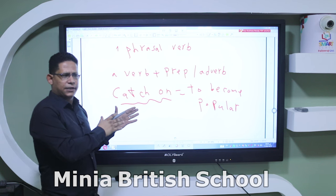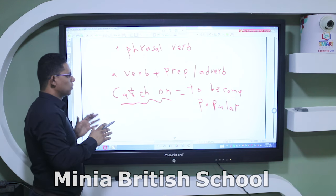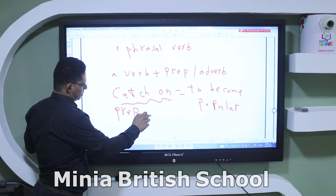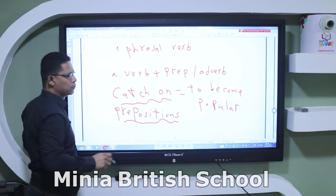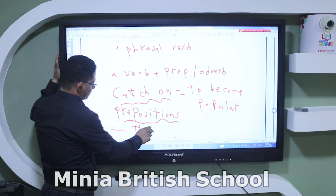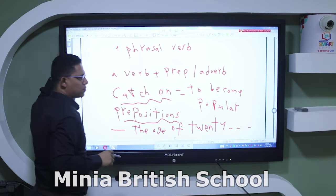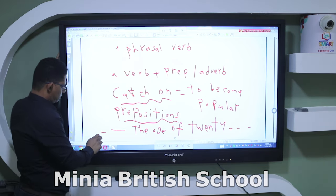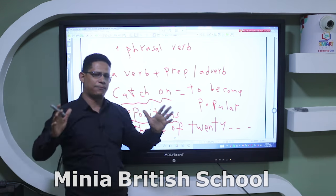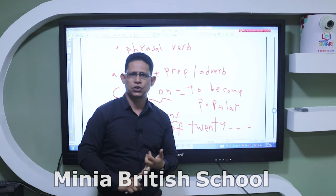We can find these things in 'Listen to' sections in each unit. Another vocabulary topic is prepositions. For example: 'at the age of 20' — should I say 'in' or 'at'? Of course 'at.' So when you study vocabulary, don't just revise the words; you have to check the collocations, prepositions, and phrasal verbs.